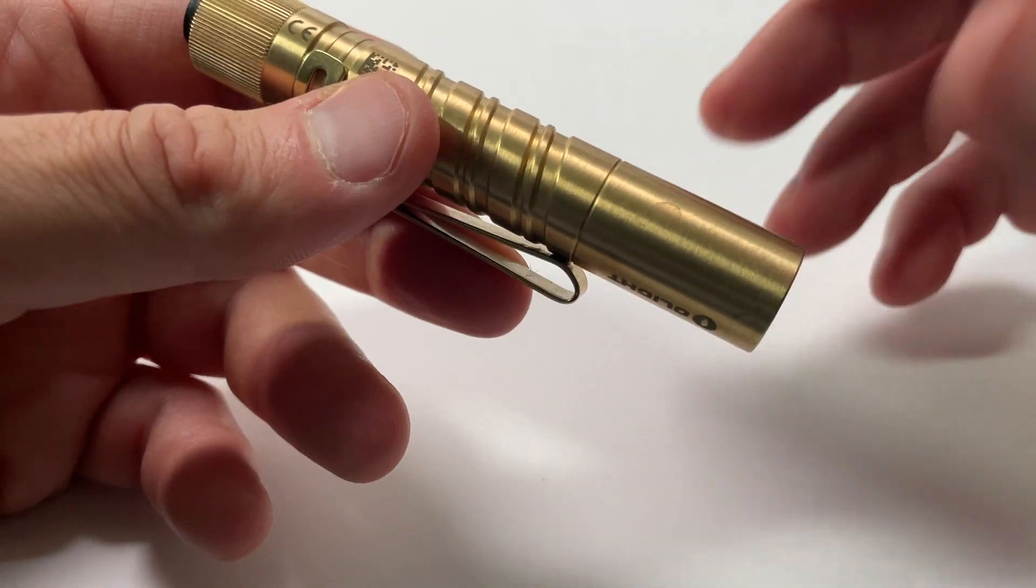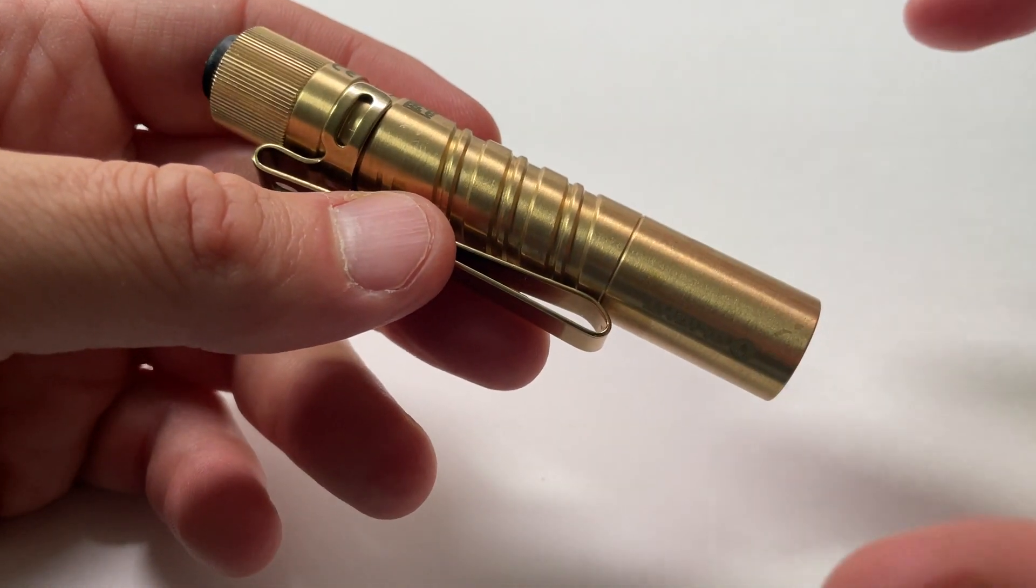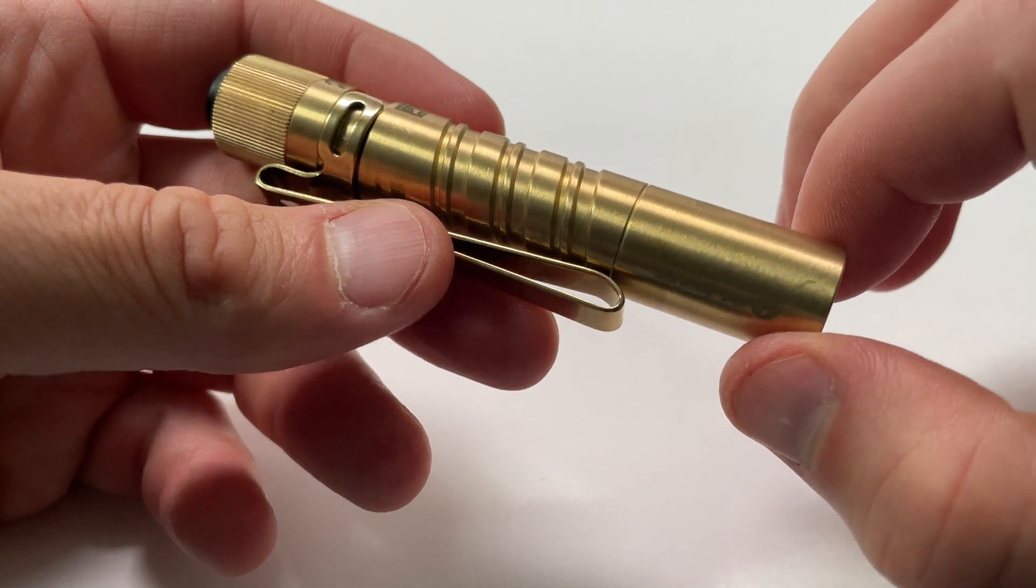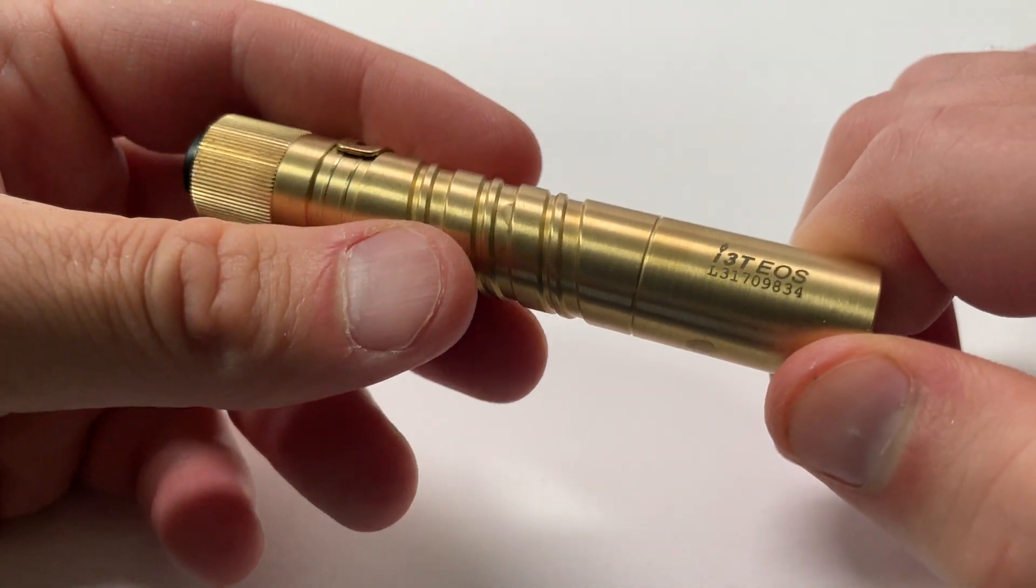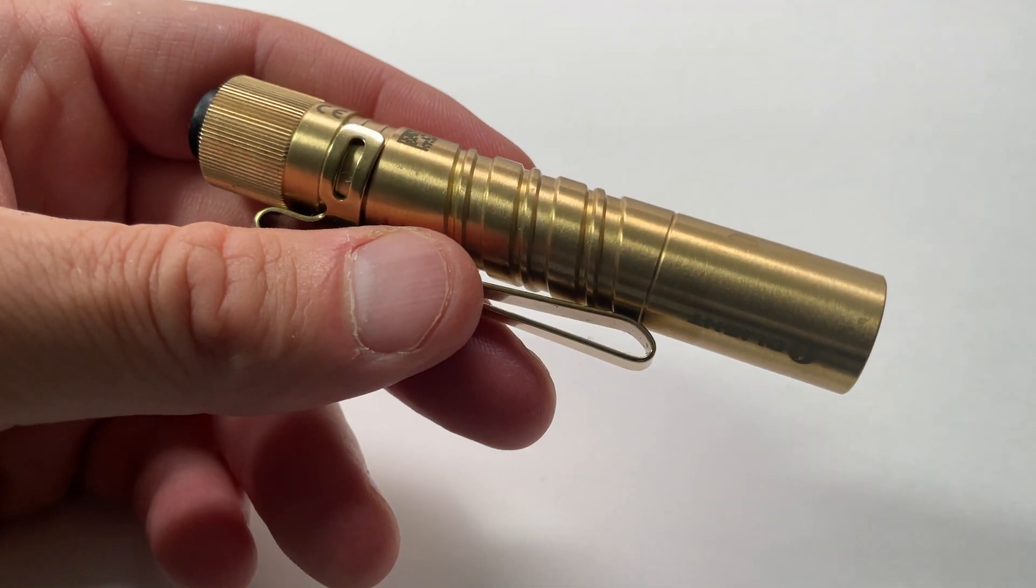That you're going to see from a piece of brass. So that should cover it with the I3T EOS.